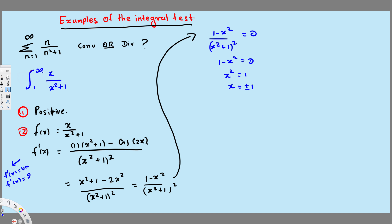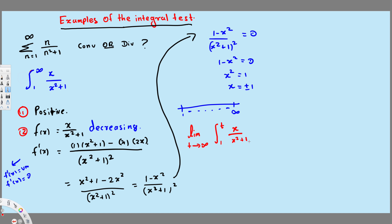So now we start the integral test. We've proved the function is positive and decreasing, so now we do the integral test. We take the limit as t approaches infinity, and instead of infinity we put t — so this is the integral from 1 to t of x over x squared plus 1 dx. If you notice, we have the derivative of the denominator on top, so we can do u-substitution.